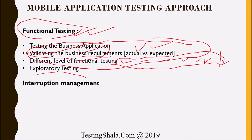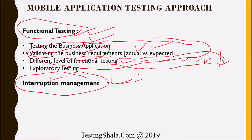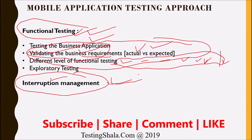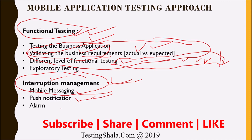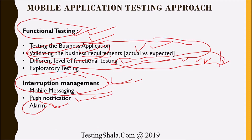The next test approach is interruption management. When testing on a device, the app should not throw exceptions when an interruption occurs in the middle of an operation. For example, when messages suddenly arrive on your mobile while the app is running, it should work seamlessly. Similarly, push notifications should not disrupt the app, and when an alarm triggers, the app should not crash or behave unexpectedly.